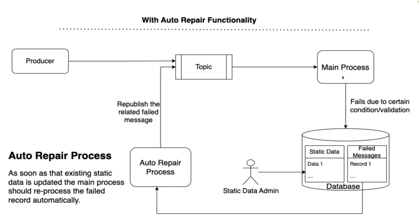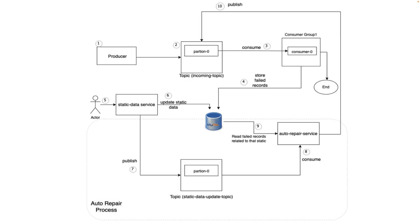Without a person manually taking those failed messages and republishing them to the main topic for reprocessing — that is what auto repair processing does. It should be intelligent enough to identify which messages should be reprocessed based on which static data was updated. Let's see how we can achieve this.